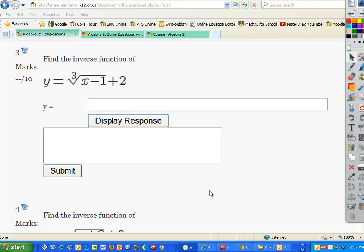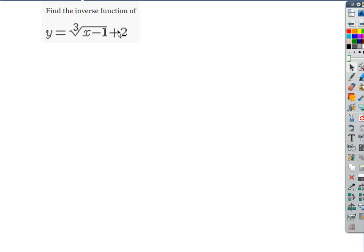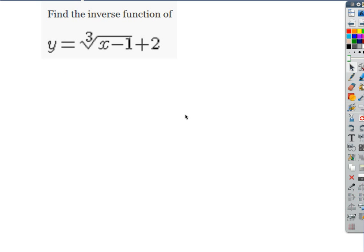Okay, to find an inverse, it's really simple. If it's written as f of x, we write it in terms of y, which is already done for us. And then all we do is we switch the x and y and solve for y. Trade the x's and the y's. Remember doing that?